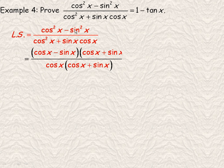So cos squared x minus sin squared x will factor into cos x minus sin x times cos x plus sin x. That is the difference of two squares factoring. And there is a common factor of cos x in the denominator. So we can factor cos x out.